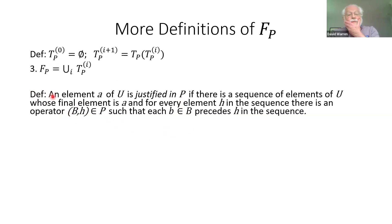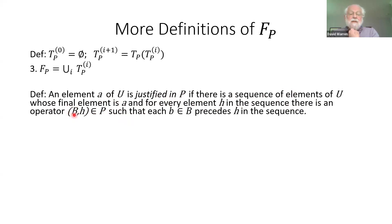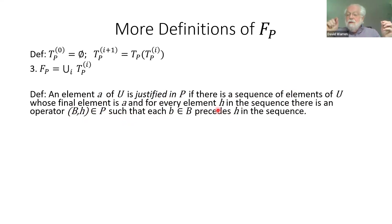Another definition we want is the concept of a justification. An element of U is justified in P if there's a sequence of elements of U whose final element is the justified element, and for every element H in the sequence, there is an operator of P with H as the target, and every element of the antecedent set precedes H in the sequence.